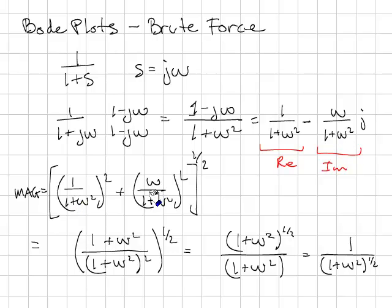Here's the real part. Here's the imaginary part. That's a 1 half. Take the square root. Do some simplification and I'm left with 1 over 1 plus omega squared to the 1 half or the square root.